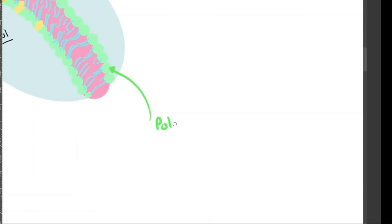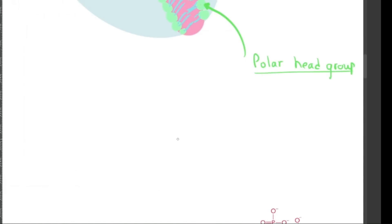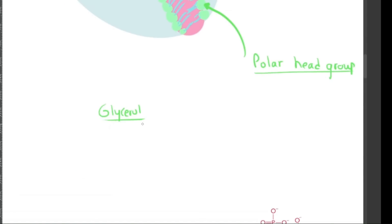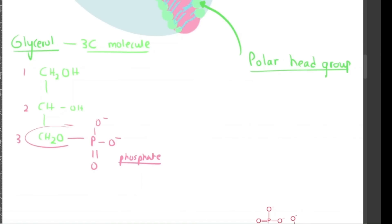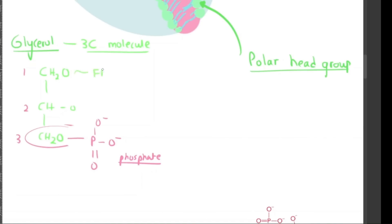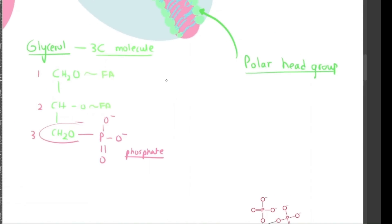Now zooming in on the green polar heads, that is the glycerol that I was talking about. Glycerol is this three-carbon polar molecule. What makes this unique is that it's able to face the polar areas, such as the cytosol and the extracellular matrix. It's bound to, on one carbon, a phosphate group. And on the other two carbons, it's bound to a fatty acid tail via an ester linkage. This entire head group is called a phosphidate.